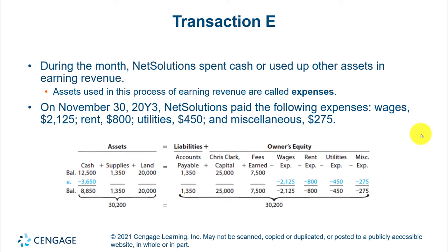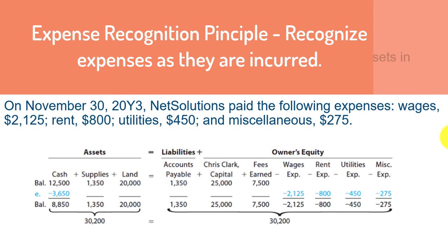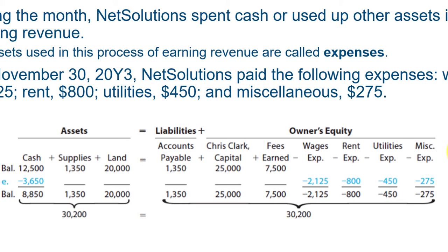Next, you have some expenses. I want to point out that when you bought the supplies, there was no expense. You will only expense supplies when you use them up. This is a very important concept — in accounting, it's not about when you spend the cash; it's about as you use things up, you expense them. The expenses we have are rent, utilities, miscellaneous, and wages. Just stick the word 'expense' after the name of it. These will directly lower your equity and also lower your cash.